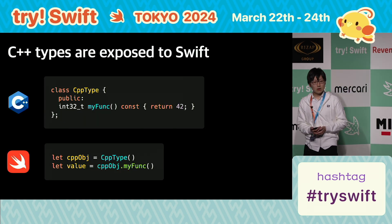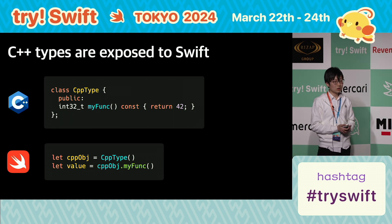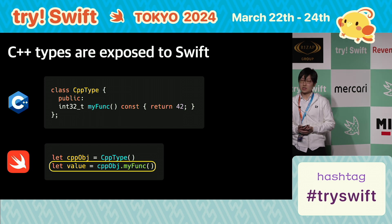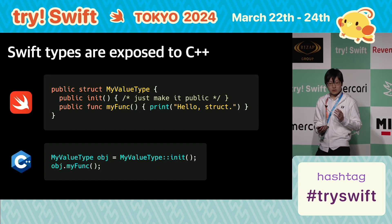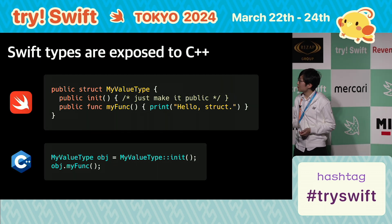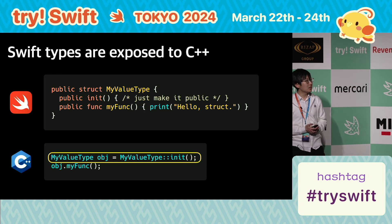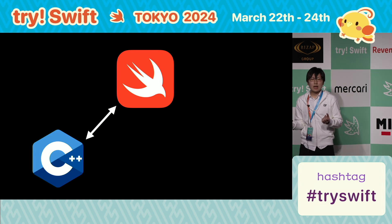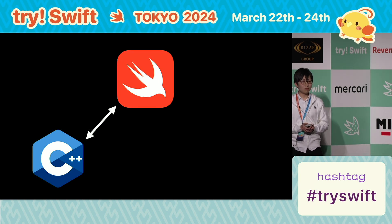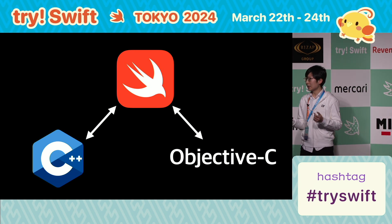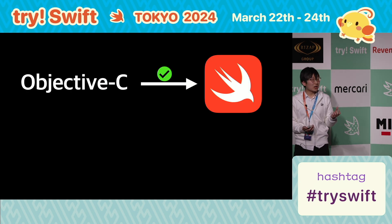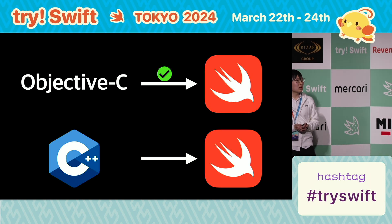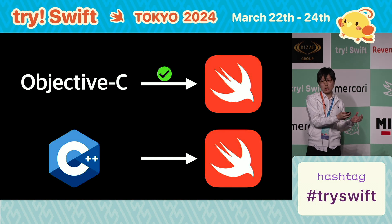With C++ interoperability, C++ types and functions are exposed to Swift. So in Swift code, you can directly initialize a C++ type object and call C++ functions like this. Also, Swift types and functions are exposed to C++, so in C++ you can initialize a Swift type object and call Swift functions directly. Swift and C++ now have bidirectional interoperability, which is very similar to Objective-C and Swift interoperability. We already had experience migrating Objective-C code to Swift with this interoperability, so we can expect to use C++ interoperability to migrate old C++ code to Swift.